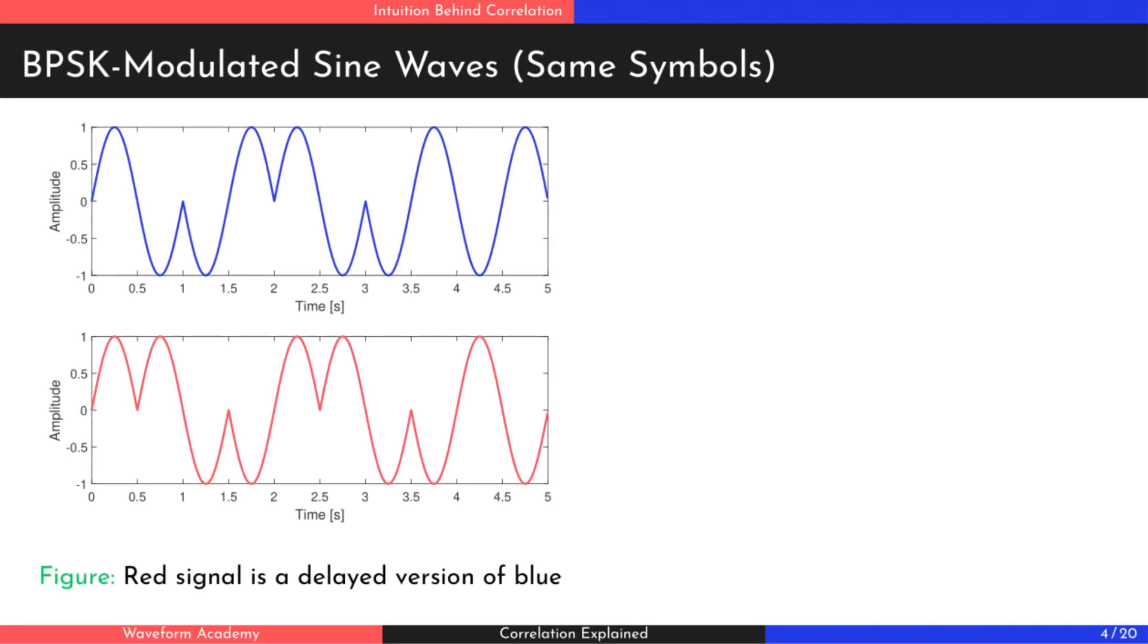Imagine we have two digital signals. In telecommunications, we often face a simple but important question. Are these signals similar? To answer this, we can calculate their correlation function, which looks like this.